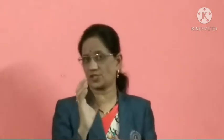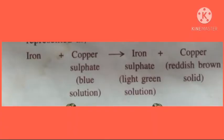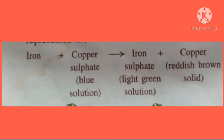In some chemical reactions, a change of color takes place when the reactants combine with each other to form the products. For example, when few pieces of iron are dropped into a blue solution of copper sulfate, its blue color slowly changes into green, because the new substance formed is iron sulfate. This reaction can be represented as: iron reacts with copper sulfate to form iron sulfate and copper.